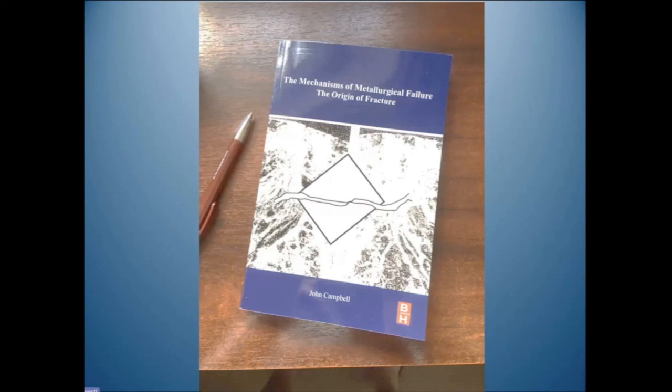Consider a carbide at a grain boundary in a steel — very often it is seen to be cracked. Our normal logic says: apply shear stress, the stress makes the crack. We start with the inclusion, apply stress, get a crack. In my view that is totally wrong. The crack is there first — it is pre-existing.